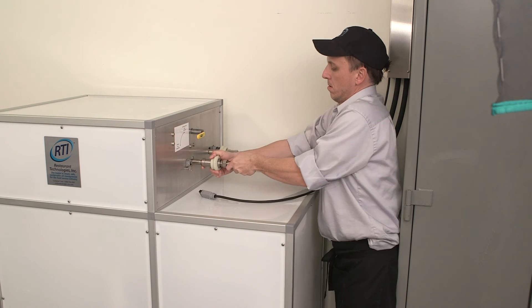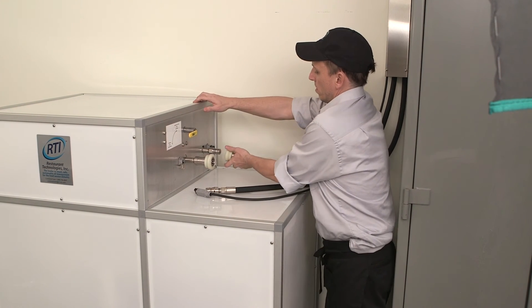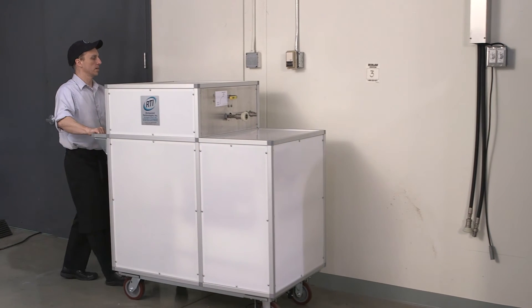When the portable oil unit is out of fresh oil, disconnect the hoses and power cord and return to the fill station.